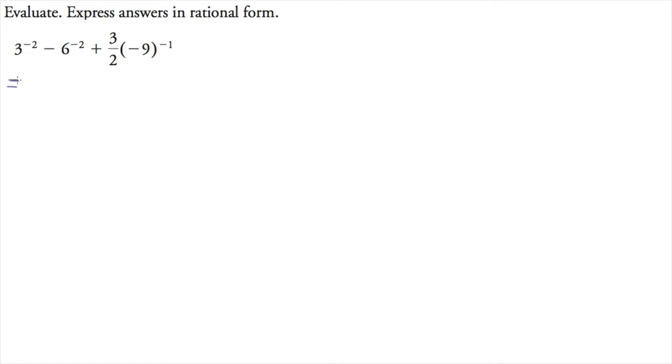So what do we know? Well, first thing is I know that 3 to the negative 2 is 1 over 3 to the 2. I know that 6 to the negative 2 is 1 over 6 to the 2. I know that negative 9 to the negative 1 is negative 1 over 9 to the positive 1, or just that exponent is now gone.